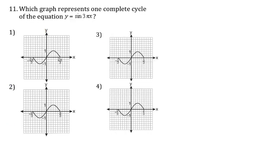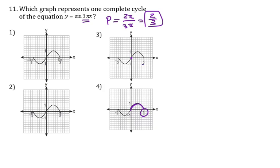Number 11: which graph represents one complete cycle of sin(3πx)? The period is 2π divided by 3π, which gives 2/3. So the full period is 2/3. From zero to 2/3 we see only half the sine curve in some choices. Choice 3 goes from zero to π/3 showing half the cycle, continuing to 2π/3 to complete it. Our answer is choice 3 since the period is 2π/3.